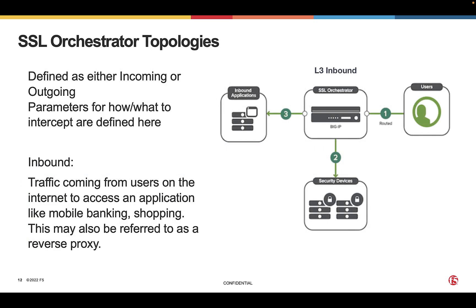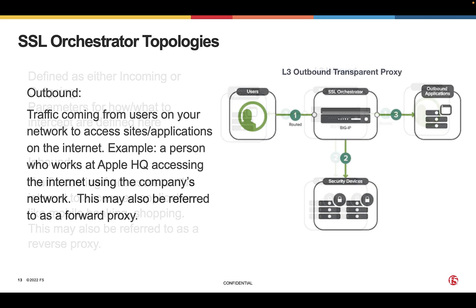An SSL Orchestrator topology is defined as either incoming or outgoing. An example of an inbound topology is when users on the internet access an application that sits behind SSL Orchestrator — this could be a mobile app for banking or shopping. An example of an outbound topology is when users on the internal network access the internet through SSL Orchestrator, such as an employee at the office accessing the internet via the company's network.